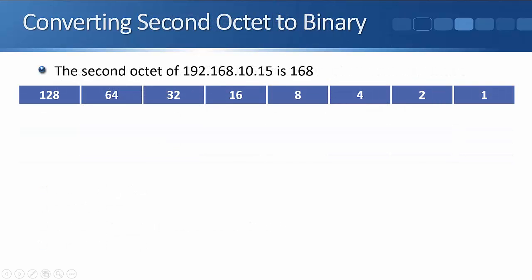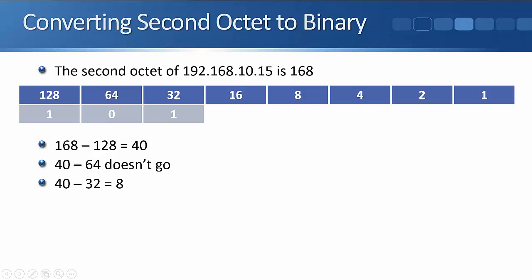Let's do this same process again for the second octet of 168. Does 128 go into 168? Yes it does, so we'll put a 1 in there. The difference between 168 and 128 is 40, we've got 40 left. Does 64 go into 40? No it doesn't, so we put a 0 in that column. Then does 32 go into 40? Yes it does, so we put a 1 in there.